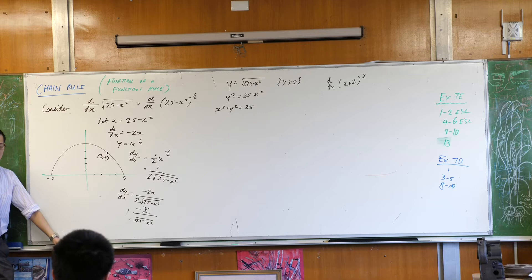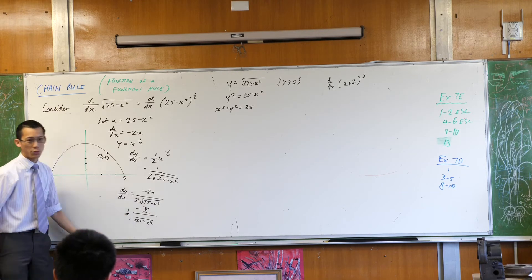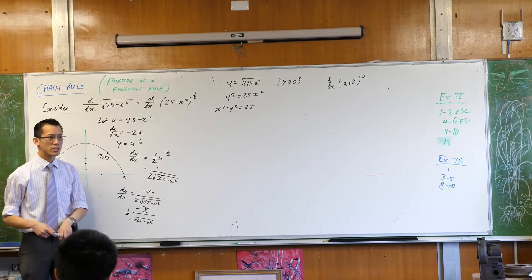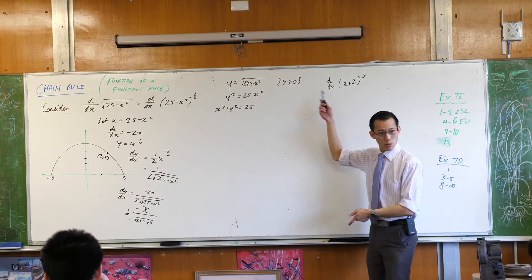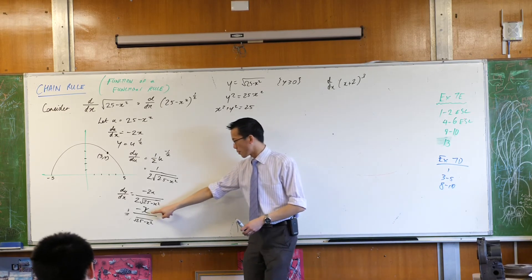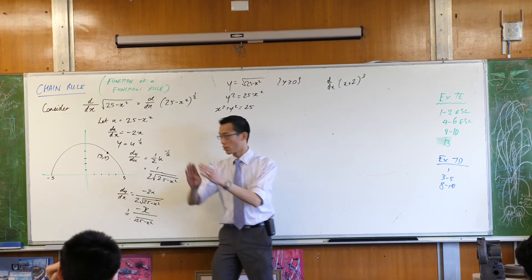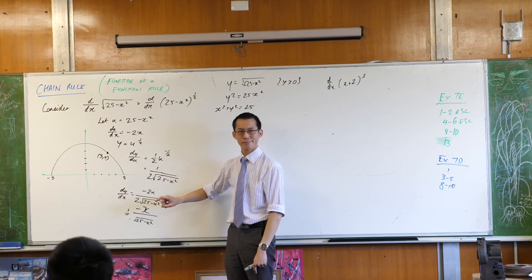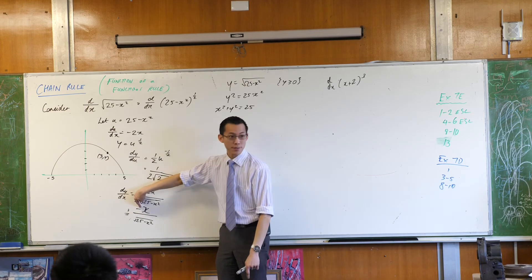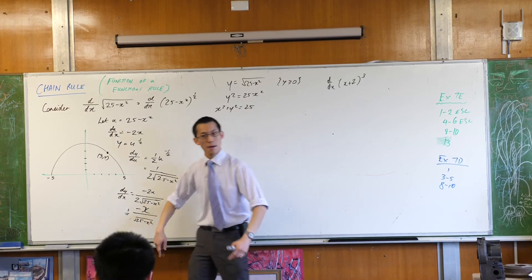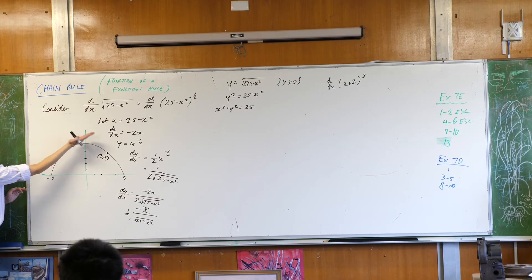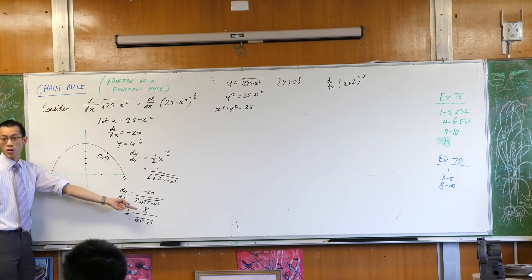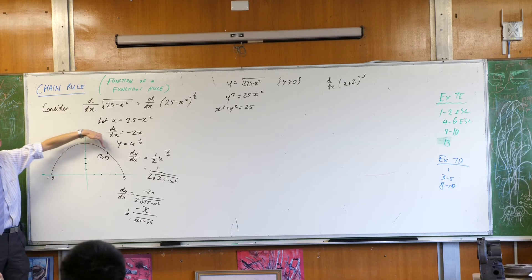Before we evaluate this, look carefully at the denominator. Its sign must be positive all the time — because of the square root restriction. But the numerator's sign changes. When x is negative, that's the left-hand side of the semicircle: negative times negative gives a positive gradient, which makes sense because the function is increasing there — any tangent is an upward line. When x is positive, the numerator is negative, so all those tangents have a negative gradient.